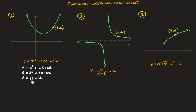I'll start by getting rid of the 36 by subtracting 36 from both sides. So we have 6 minus 36, which is negative 30, equals 5b. Now I get rid of the 5 multiplying b by dividing both sides by 5. So we have negative 30 over 5 equals b, and since negative 30 divided by 5 is negative 6, the unknown coefficient b equals negative 6. And we're done.